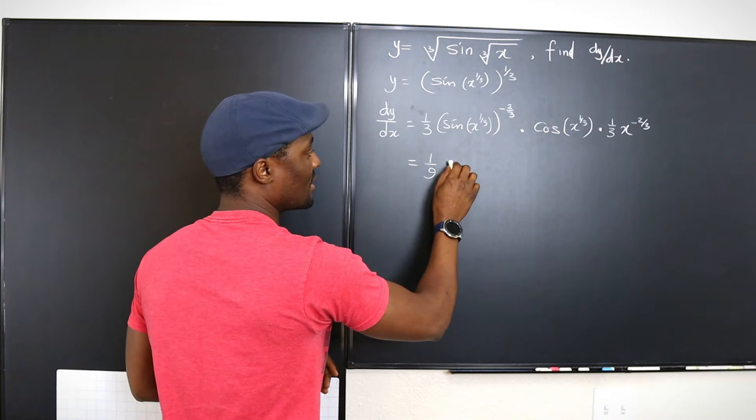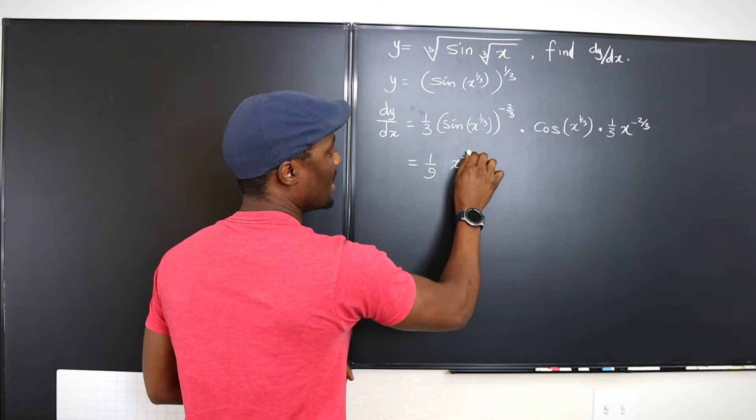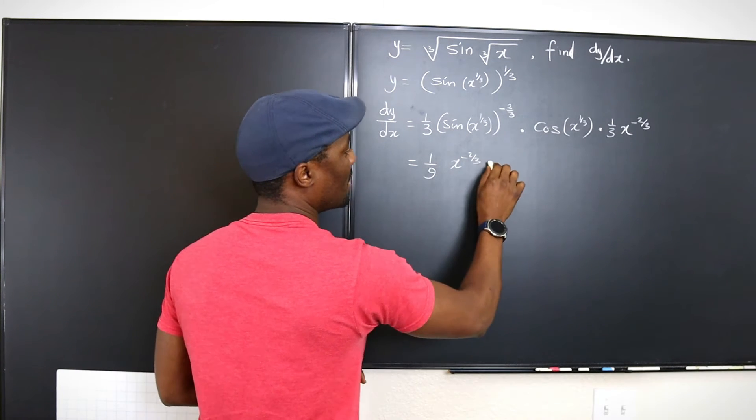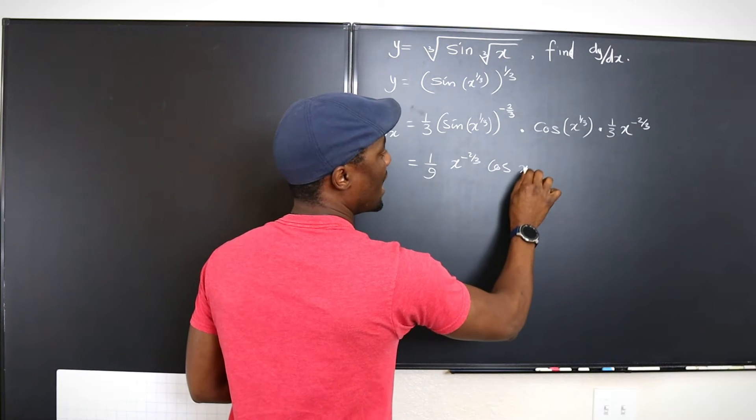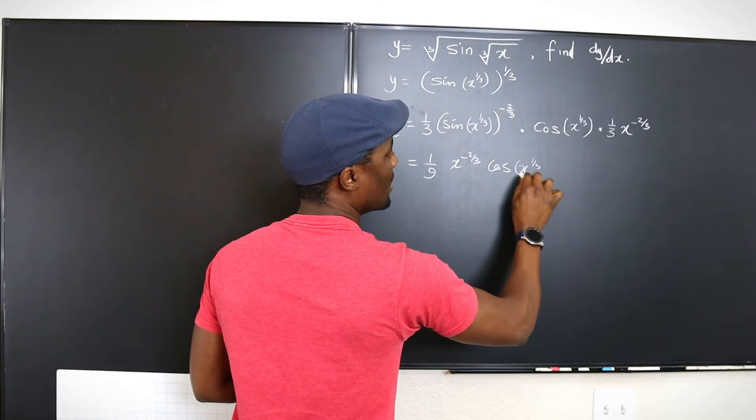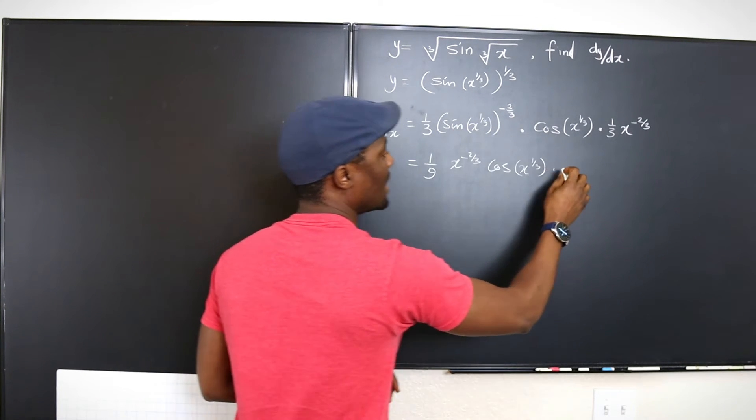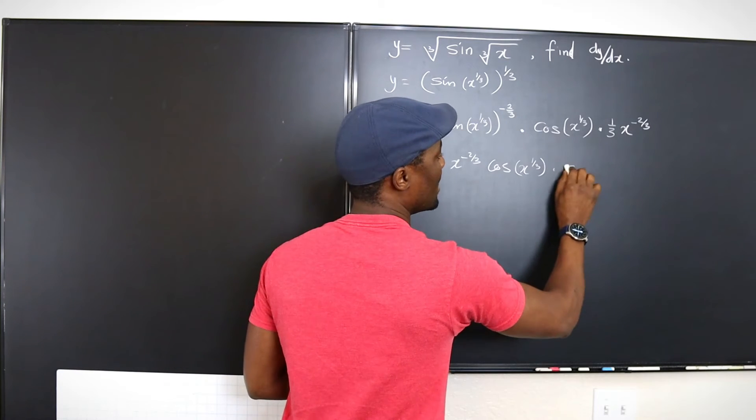We can start with the x. That's going to be x to the negative two thirds multiplied by cosine x to the one third. Multiply by sine. This is going to be clumsy a bit.